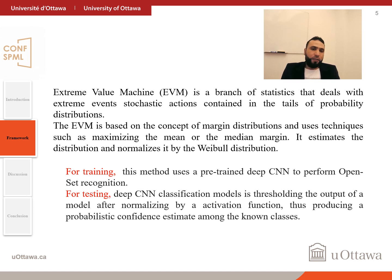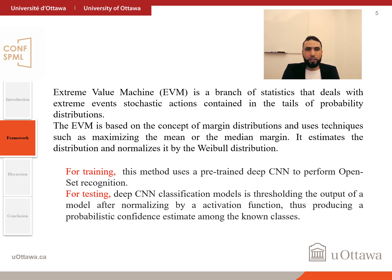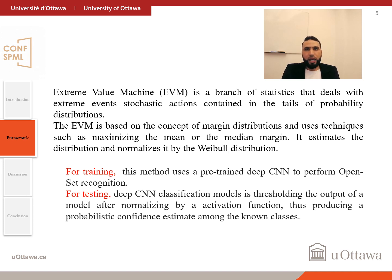The extreme value machine is a branch of statistics that deals with extreme values existing in the tail of probabilities. For training, this method uses pre-trained deep convolutional neural networks to perform open set recognition. For testing, the method uses a threshold based on this probability to determine whether the audio sample belongs to a known class or comes from a new class.